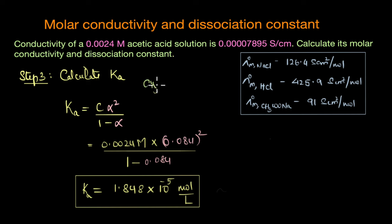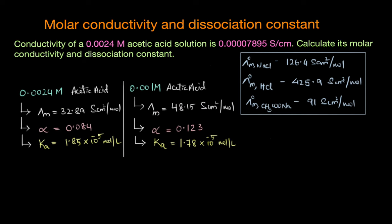As we increase dilution, equilibrium shifts favoring more products, so more acetic acid dissociates, increasing the number of ions in solution and the molar conductivity also increases. For comparison, here are two different concentrations of acetic acid with their corresponding molar conductivity and dissociation constants. From our question, 0.0024 molar acetic acid has a molar conductivity of 32.89 cm² per mole, alpha of 0.084, and a dissociation constant of about 1.85 × 10⁻⁵ mol per liter.